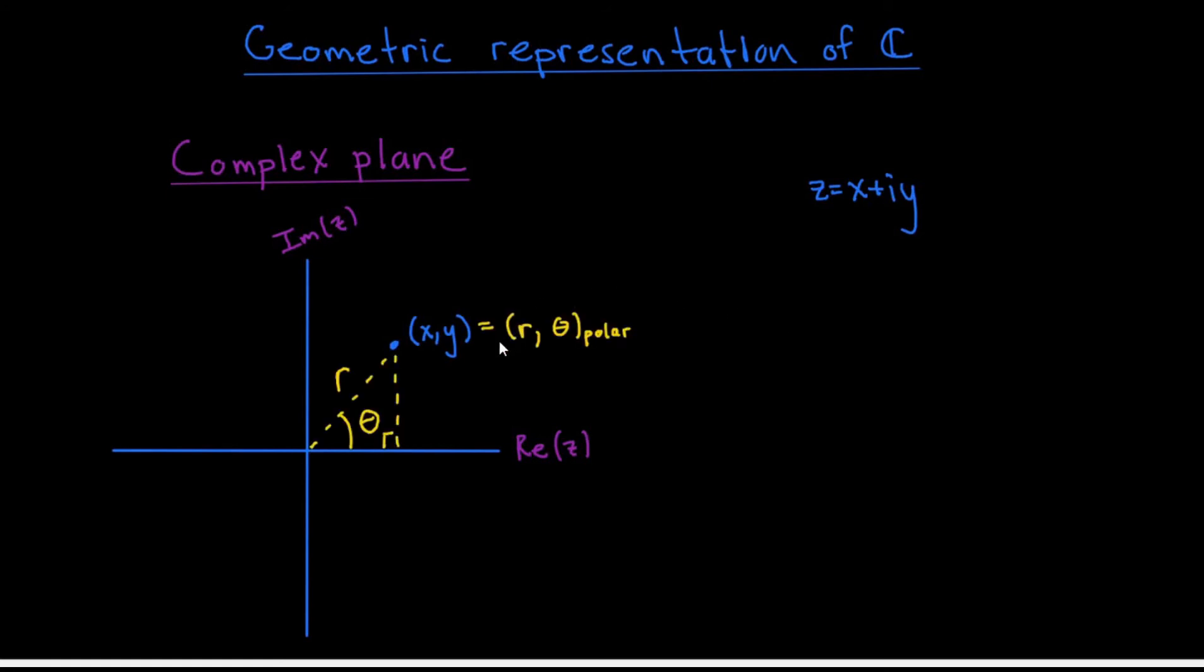It's also very useful to talk about the polar representation of complex numbers in the complex plane. Let's write the point (x, y) as (r, theta) in polar coordinates where r, as usual, is the distance of (x, y) from the origin, and theta is the angle that the position vector of (x, y) makes with the positive real axis. It's easy, then, to see that r and theta are related to x and y by the equations r equals modulus of z, x equals r cosine theta, and y equals r sine theta.